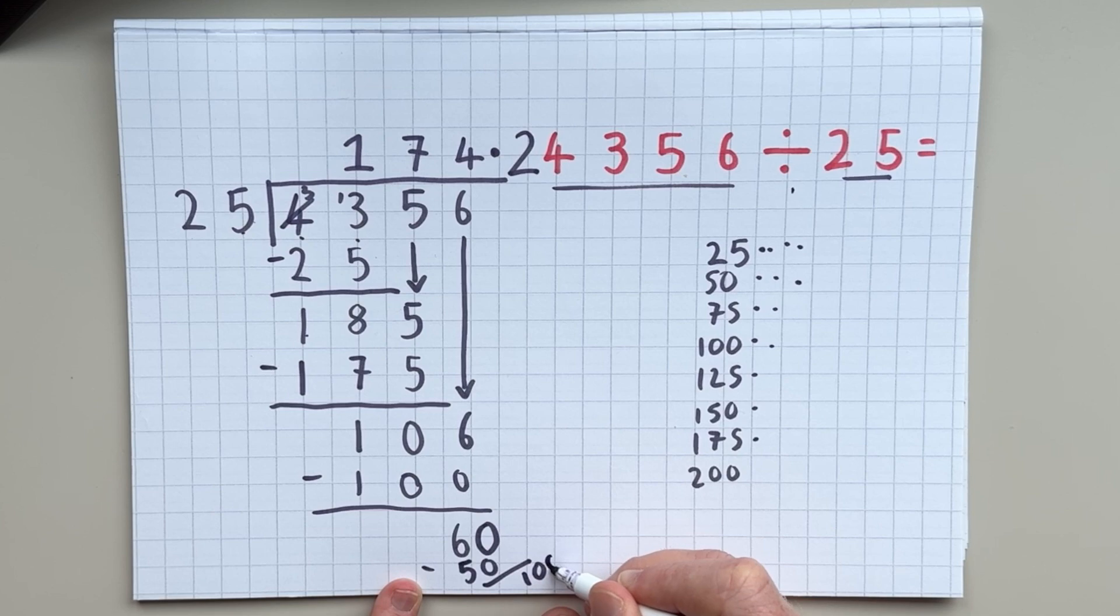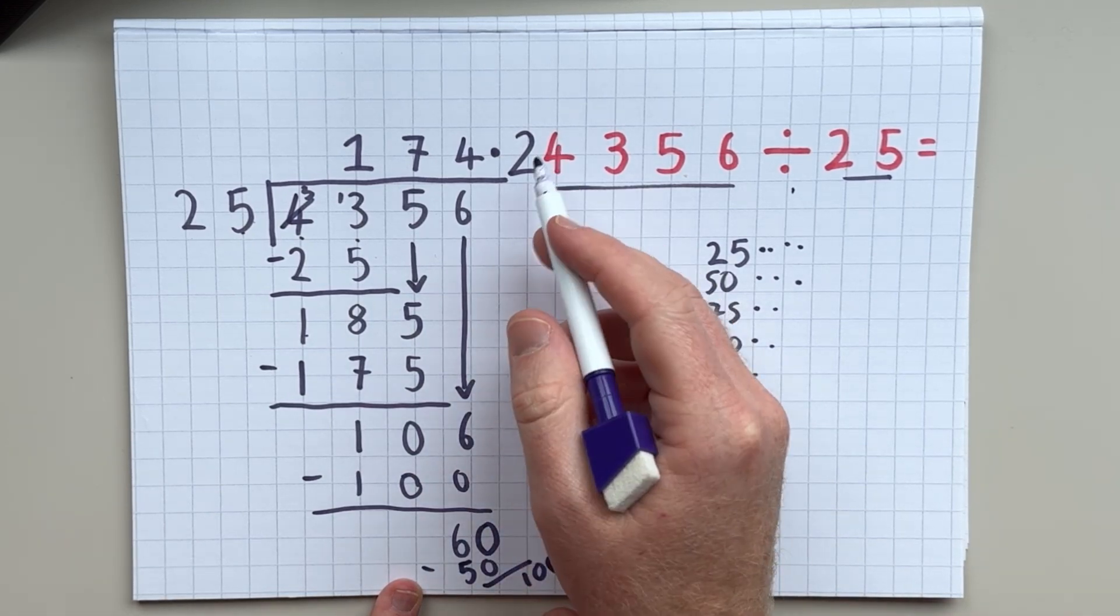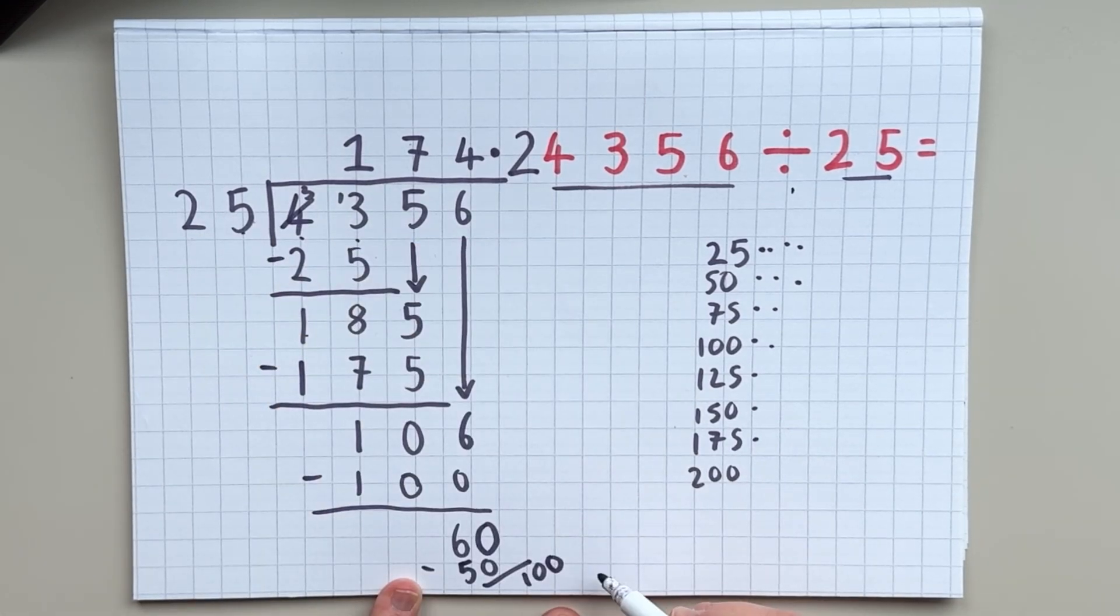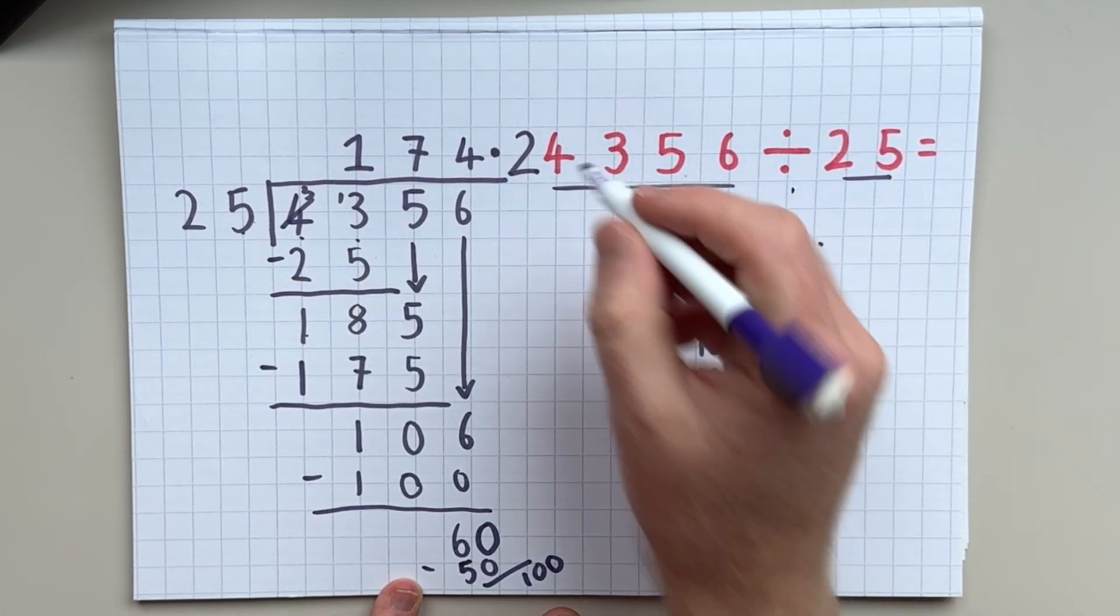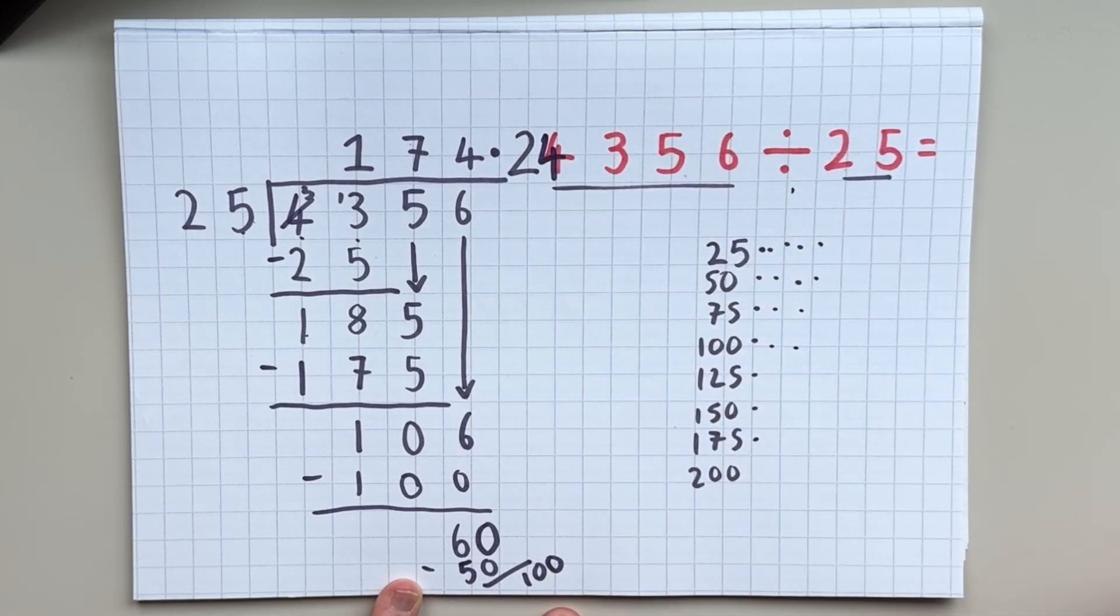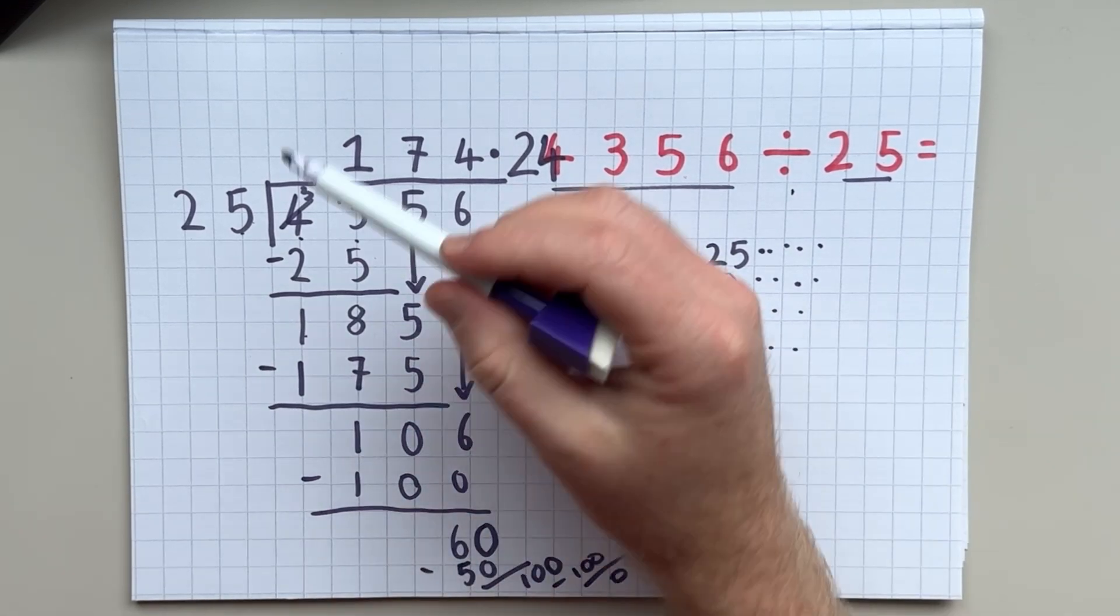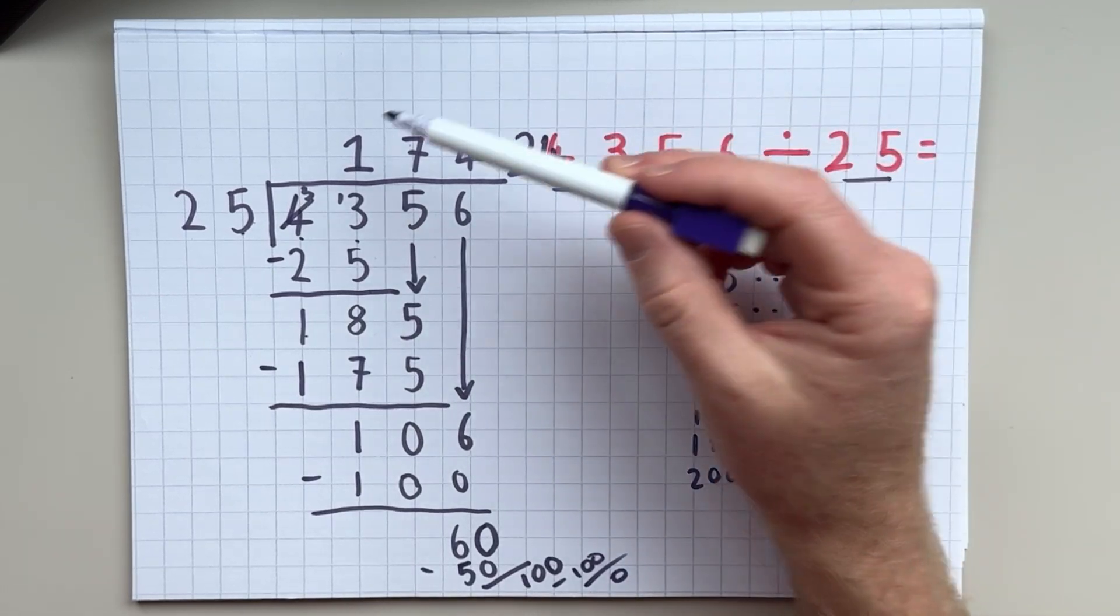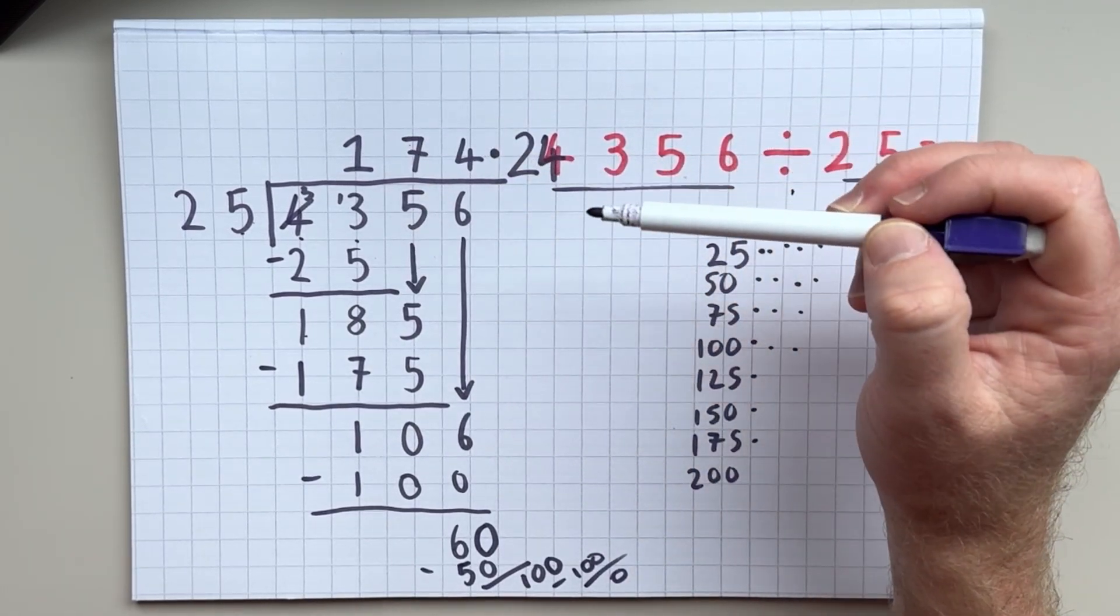And then I'm going to add a 0. So every time we do a decimal number, we add a 0. So now I've got how many 25s in 100. There's one, two, three, four. And four 25s is 100. So there's 0 remainder. So 4,356 divided by 25 is 174.24.